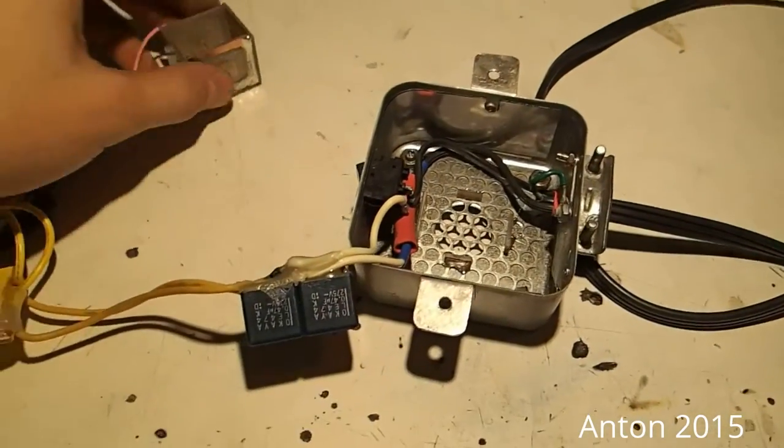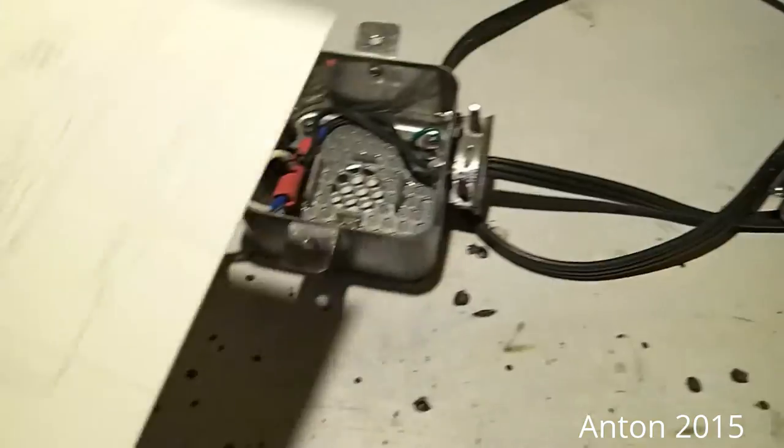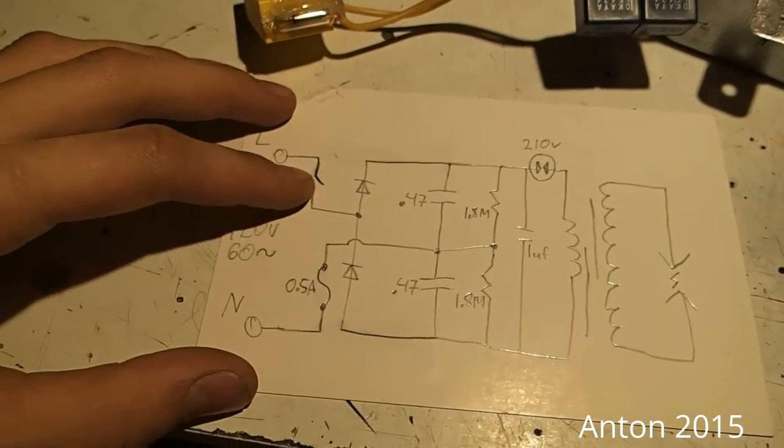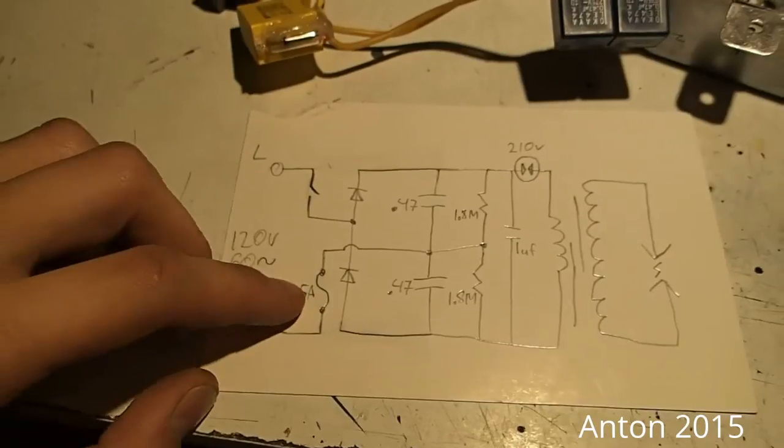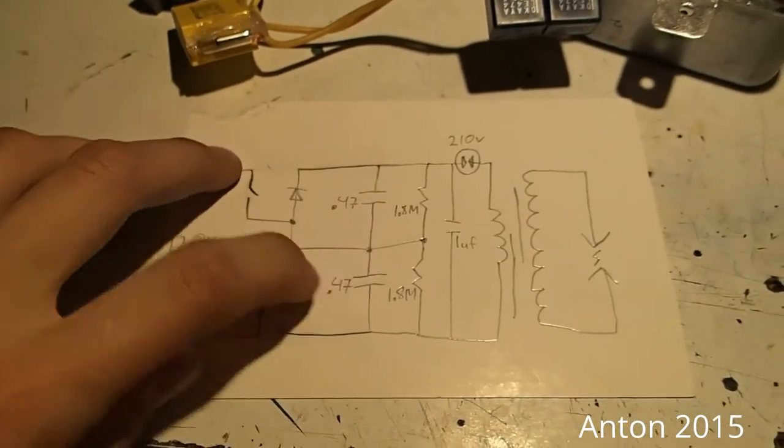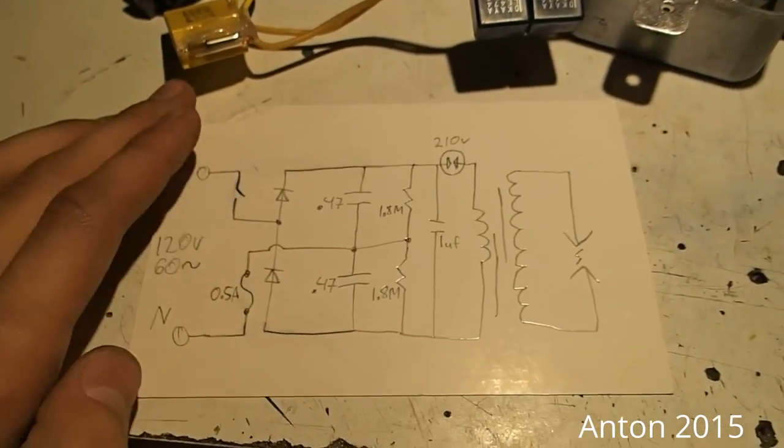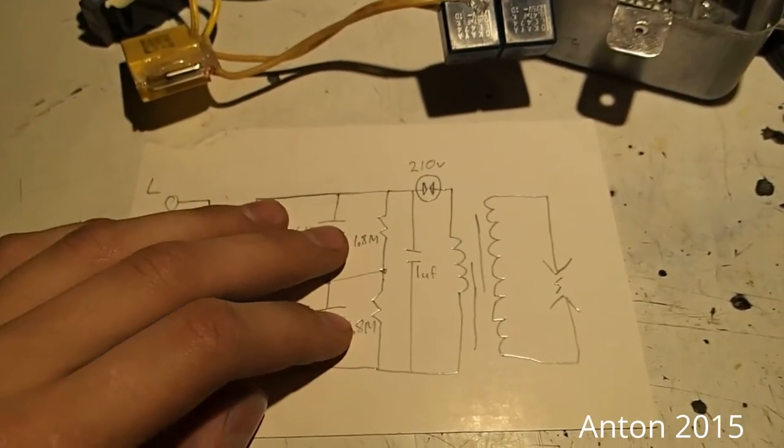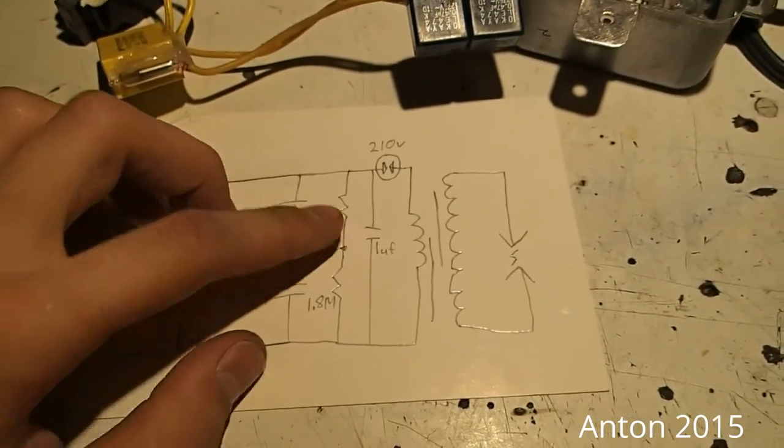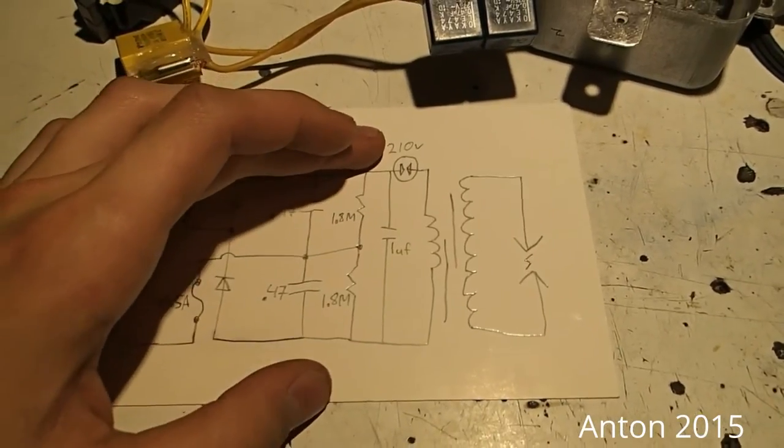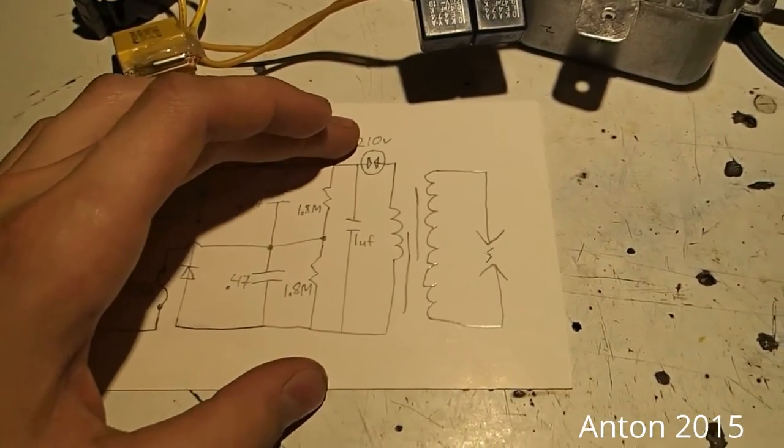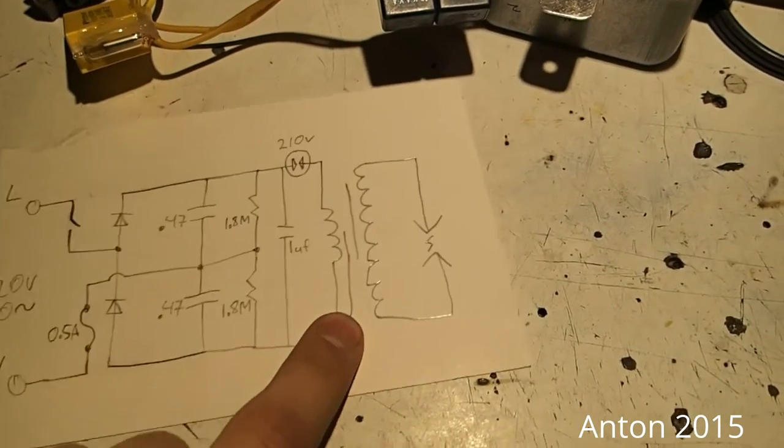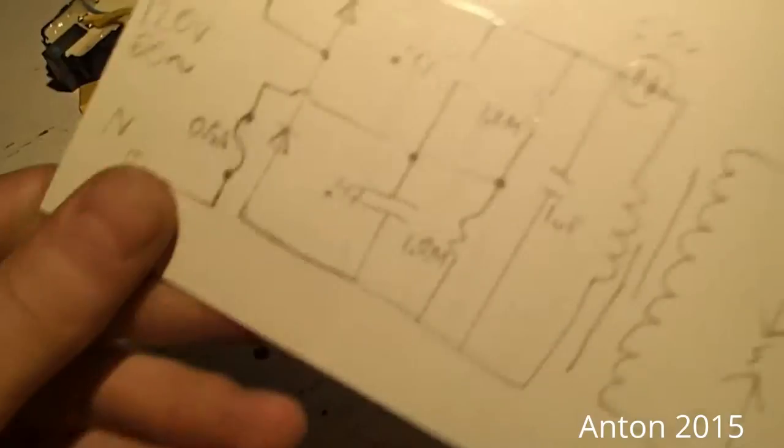Electrical schematic-wise, it's pretty simple. Here, I have the schematic now. On the live side here I have a switch, neutral I have a 0.5 amp fuse, and then I have a doubler to increase the voltage up to around 350 volts DC, two 1.8 meg bleeder resistors, a 1 microfarad storage capacitor, a 210 volt gas discharge tube, and a little flyback out of a photocopier. That's pretty simple there.